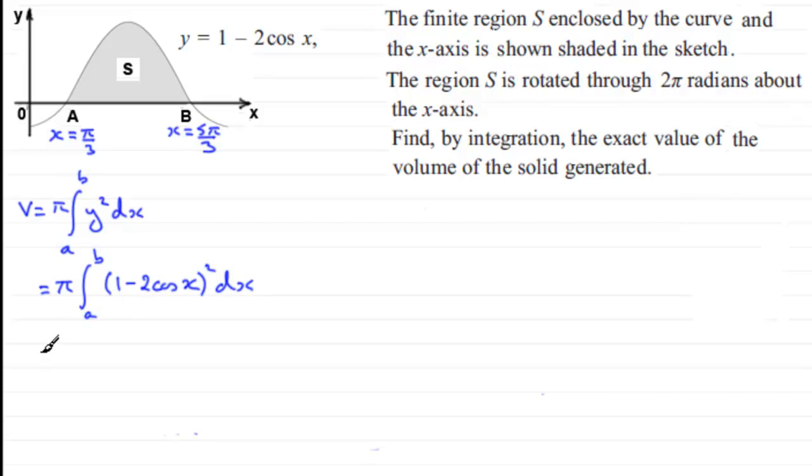Next I want to expand the bracket, so we're integrating from A to B. If we expand this in the usual way, we're going to get the first term squared, which is 1, twice the product, so that's minus 4 cos x, and then we add the last term squared, so that's plus 4 cos squared x, integrating all of this with respect to x.